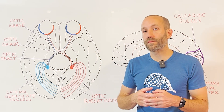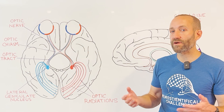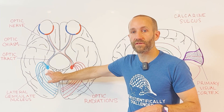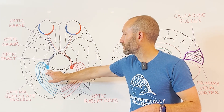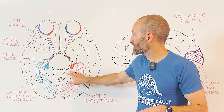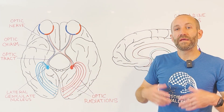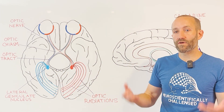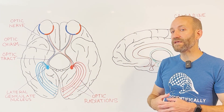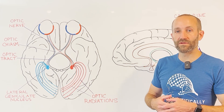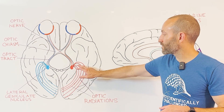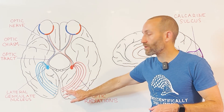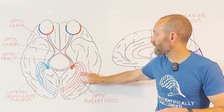Most of the fibers in the optic tracts, however, end in a nucleus in the thalamus called the lateral geniculate nucleus, with one on each side of the brain. Here the optic tracts synapse on neurons that leave the lateral geniculate nucleus and extend toward the back of the brain as bundles of fibers called the optic radiations.